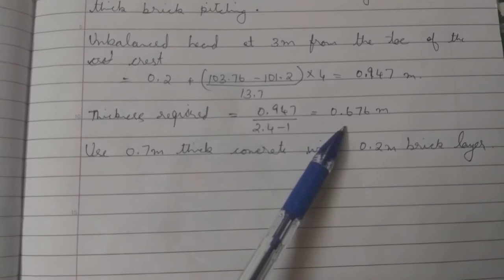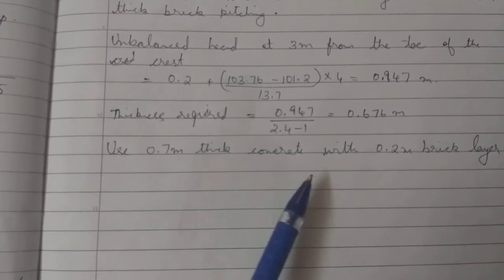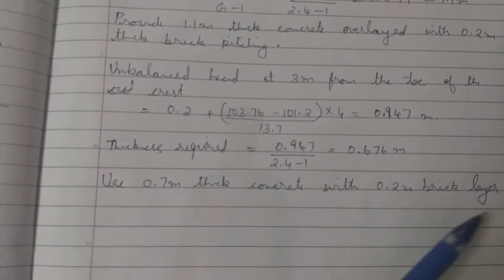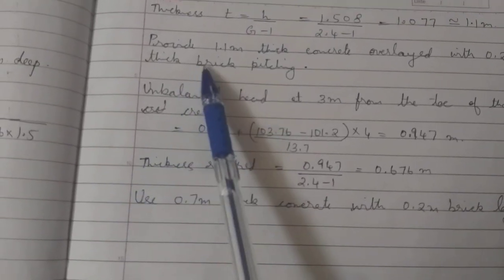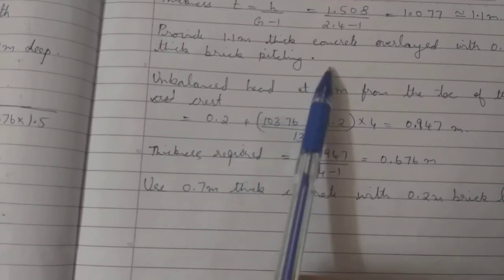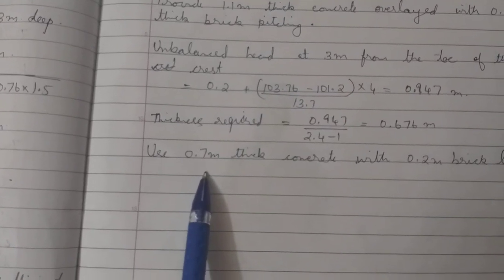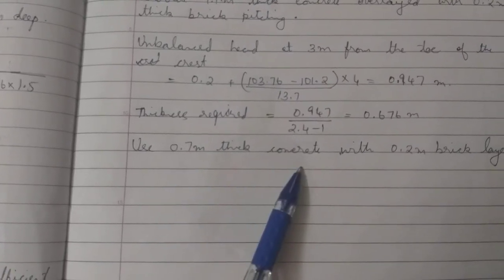The thickness required is equal to 0.947 divided by (2.4 minus 1), equal to 0.676 meters. Use 0.7 meter thick concrete with 0.2 meter brick layer. The maximum thickness is 1.1 meter near the upstream below the crest, and the minimum thickness to be provided is 0.7 meter thick.